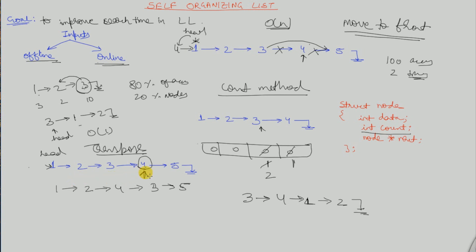The transpose method pushes the element closer to the head gradually. If the element is frequently accessed it will keep moving closer. It is like rewarding someone slowly — if you continuously work hard, you are rewarded slowly and will eventually reach the head. The Move to Front method is fast (like hitting a jackpot for one good deed), while the Transpose method rewards slowly and steadily. The Count method is based purely on frequency.